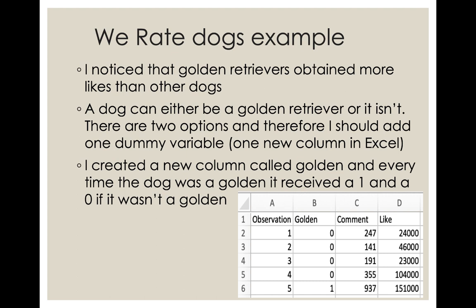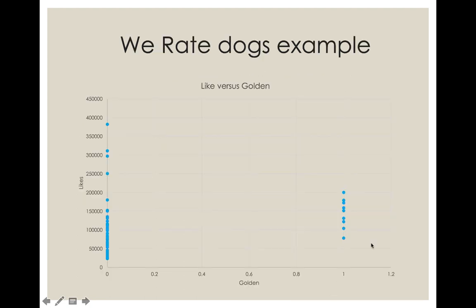We're going to go back to our We Rate Dogs example. While collecting the data, I noticed that golden retrievers obtain more likes than other dogs. So I decided to keep track of whether or not the dog was a golden or not. We assume a dog can either be a golden retriever or it's not — two options, so one new column. I created a column called 'golden' in Excel: a one if the dog was a golden, and a zero if it wasn't. Here is a graph of number of likes versus whether the dog was a golden, and you can see these dummy variable graphs are not that informative.